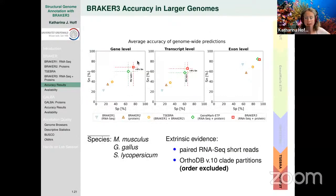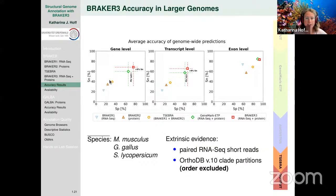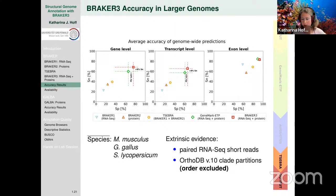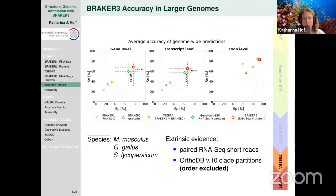For larger genomes — mouse, chicken, tomato — BRAKER1 and BRAKER2, if they even complete, show quite low accuracy because GeneMark cannot handle the large repeats. Even combining them with TSEBRA keeps accuracy low. GeneMark-ETP has much better accuracy in large genomes. BRAKER3 on top of that increases gene-level accuracy by an average of another 9%. So BRAKER3 can also be used for annotating vertebrates if you have substantial RNA-seq data.